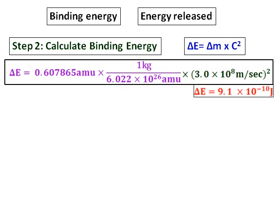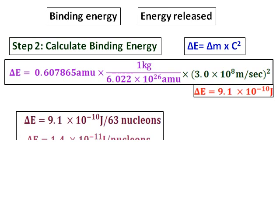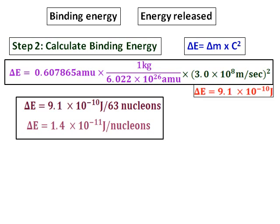Sometimes they ask you binding energy in different forms. They can ask you to calculate the binding energy per nucleon. In such case, if you look at copper-63, it has 63 nucleons. Therefore binding energy per nucleon will be this energy in joules divided by 63, and that comes as 1.4 × 10⁻¹¹ joules per nucleon.